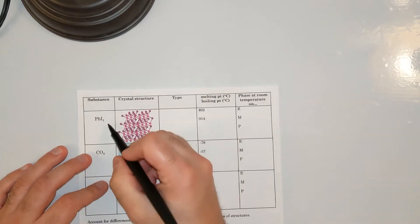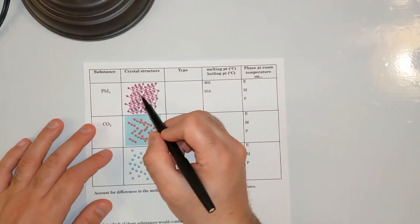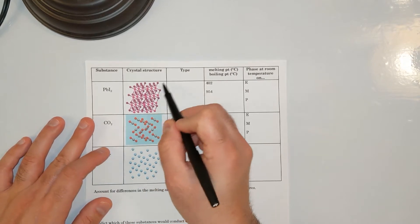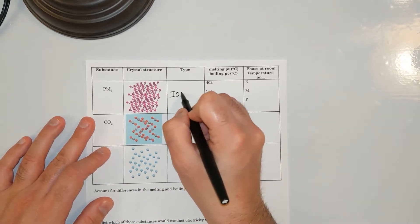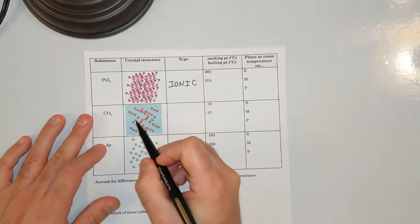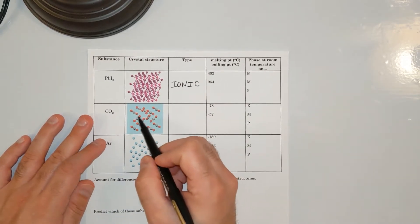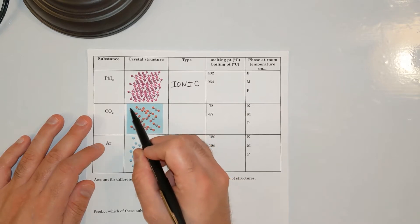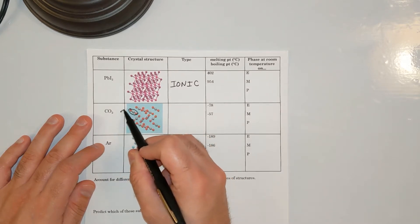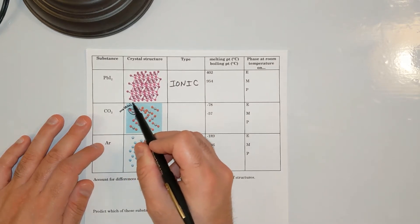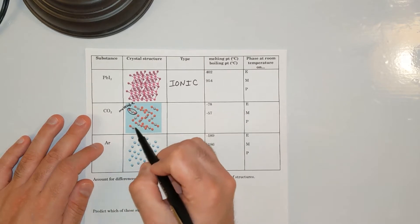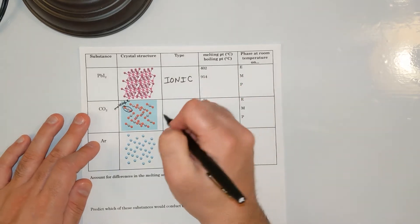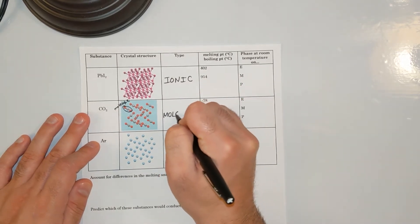Next page, we got PbI2. There's a dark purple and light purple — two different colors, completely connected. Ionic. Next, CO2: more than one color, two colors. The smallest particle is a molecule because it's CO2, and none of those particles are touching or connected whatsoever. No connections between particles makes this molecular.